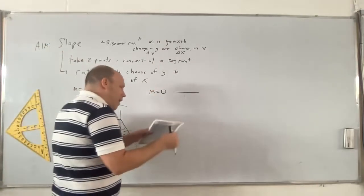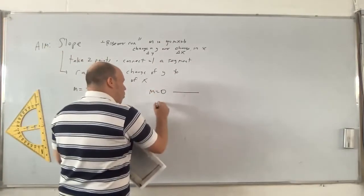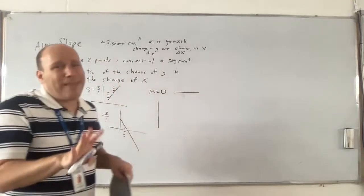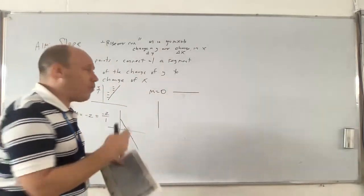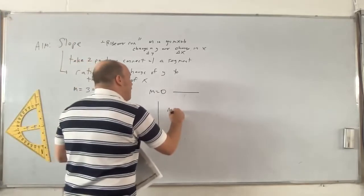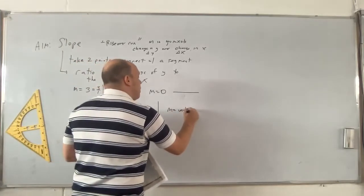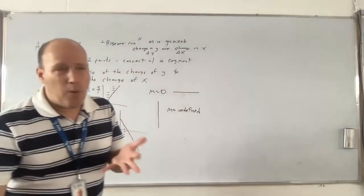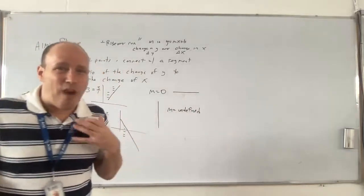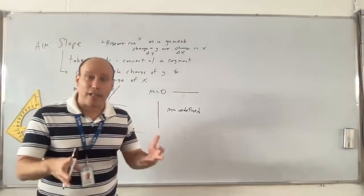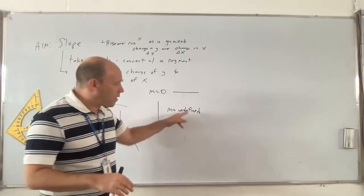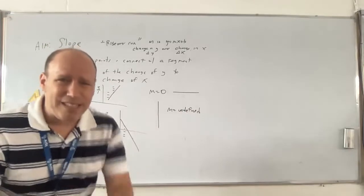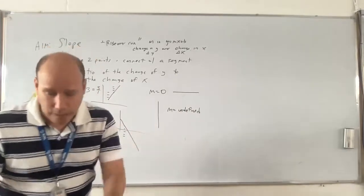The last option is a line that goes straight up and down. We refer to the slope as undefined. We'll get to that — it's an important concept when we graph rational functions and in calculus. But right now in this class, we just say it's undefined.